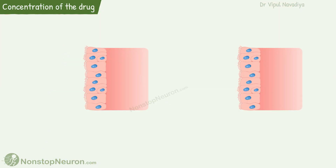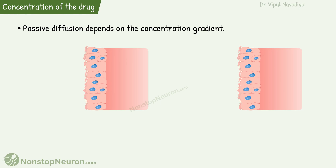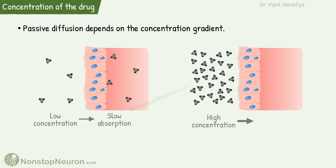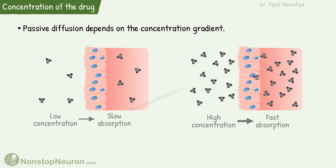The next factor is the concentration of the drug. Passive diffusion depends on the concentration gradient. For example, a dilute solution has a low concentration of drug, so the gradient from outside to inside is small. Whereas a more concentrated solution has a large gradient. Because of this difference, absorption from the dilute solution is slow, whereas that from a concentrated solution is faster — simply because more drug is there to be absorbed.